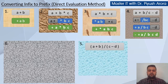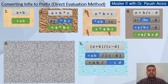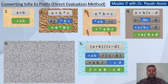Let us see the fifth example — an expression with brackets. First the brackets are evaluated. So a plus b becomes plus a b, and the rest of the expression is written as it is. Now evaluate c minus d because it is inside a bracket, so this becomes minus c d, and the rest of the expression stays as it is. Now evaluate the divide in the middle: plus a b is x, minus c d is y, so x divide y becomes divide x y.